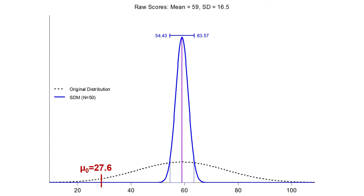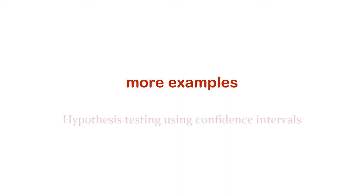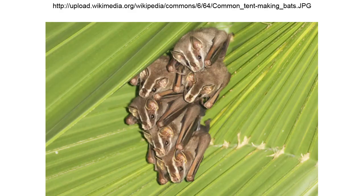That mean of 27.6 is really, really not in our confidence interval. So maybe Buffy is more violent than average. Let's go through a couple more examples on how to use this.